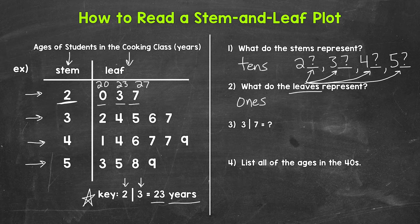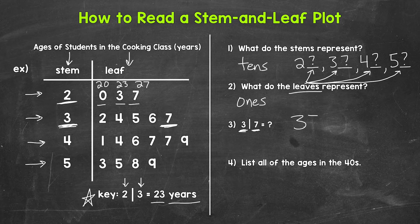Let's move on to number three, where we have a stem of three and a leaf of seven. What does this equal? Looking at the stem and leaf plot — stem of three, leaf of seven — let's put that stem and leaf together. The three is going to be in the tens place and the seven is going to be in the ones place. So that gives us 37. Putting that stem of three together with that leaf of seven gave us 37.